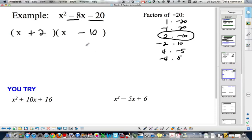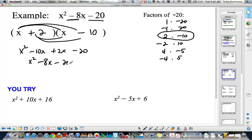So, multiply it back out. Make sure you get it. That's x squared. Minus 10x. Plus 2x. Minus 20. Negative 10x plus 2x is negative 8x. And that is what I started with. So, there's my check.